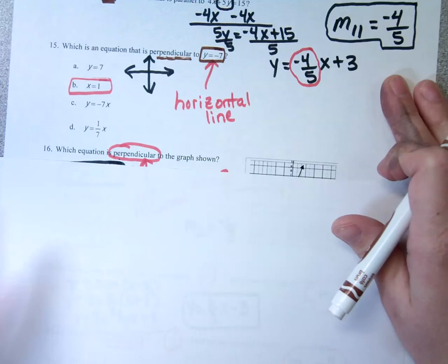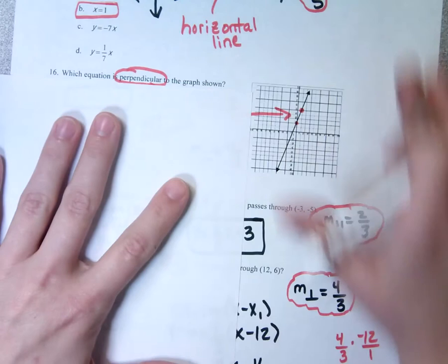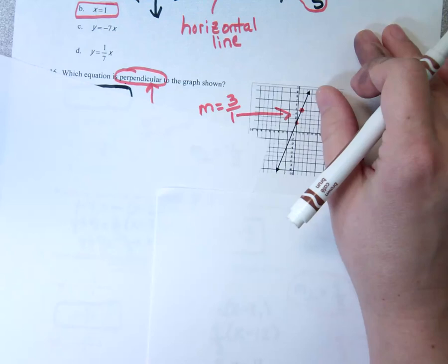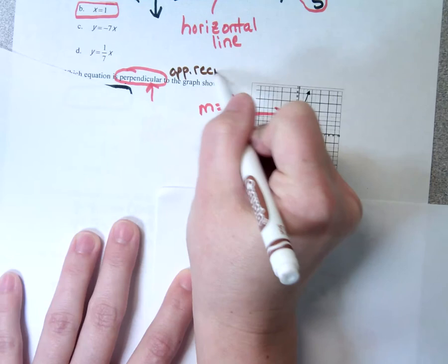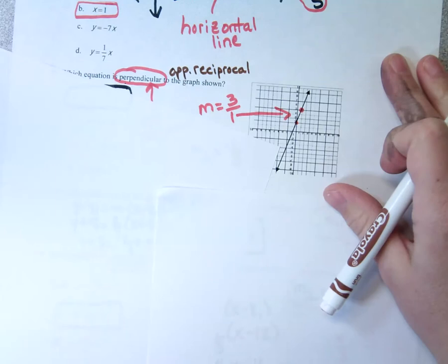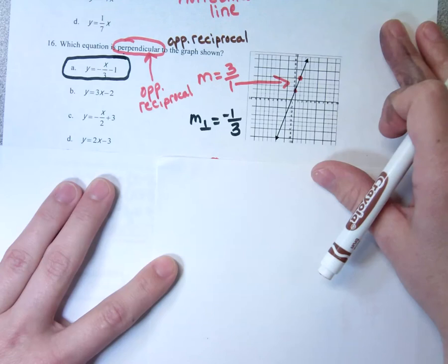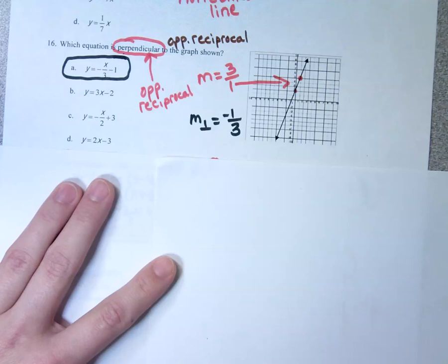This one wants to know which equation is perpendicular to the graph shown. First I needed to find the slope of this line — it looks like it goes through corners here and here, and the slope is up 3, right 1. So my slope is a positive 3. If I want to be perpendicular, I want my slope to be the opposite reciprocal — flip and switch. I flipped the fraction and switched the sign and get a negative one-third for my perpendicular slope. Then I look to see which equation shows a slope of negative one-third — and A is the winner. Parallel lines have the same slope; perpendicular lines need opposite reciprocal slopes — flip the fraction, switch the sign.